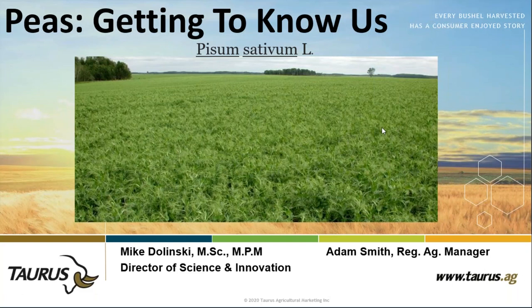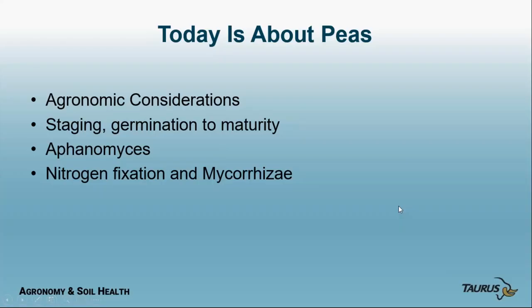So with that, let's get going. We're going to talk about some agronomic considerations, then spend a lot of time on staging and the period of growth from germination through to maturity. Then a short session on Aphanomyces, nitrogen fixation, and Adam will cover mycorrhizae. Then we'll have questions — just pop them in later on.